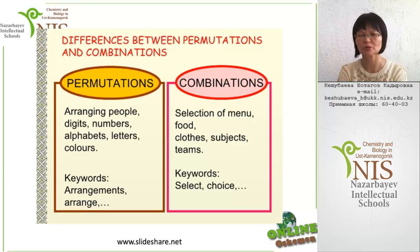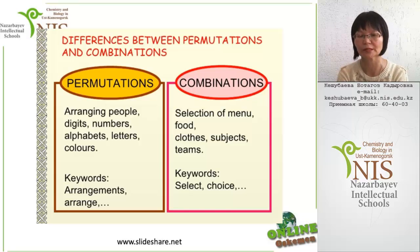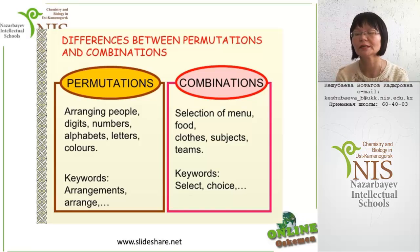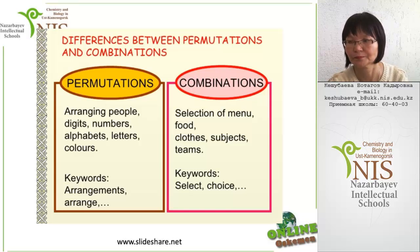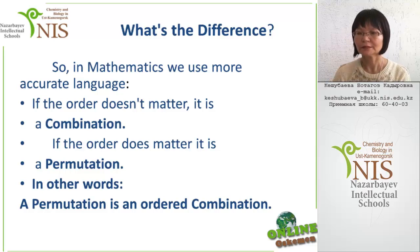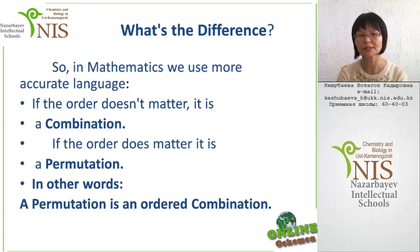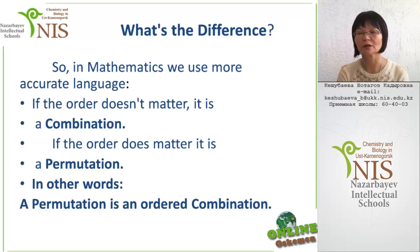So, what is the difference between permutations and combinations? Permutations relate to arranging people, digits, numbers, alphabets, letters, colors. Keywords for permutations are 'arrangements' and 'arrange.' A combination refers to the selection of a menu, food, clothes, subjects, teams. Keywords are 'select' and 'choice.' In mathematics, if the order doesn't matter, it is a combination. If the order does matter, it is a permutation. In other words, a permutation is an ordered combination.